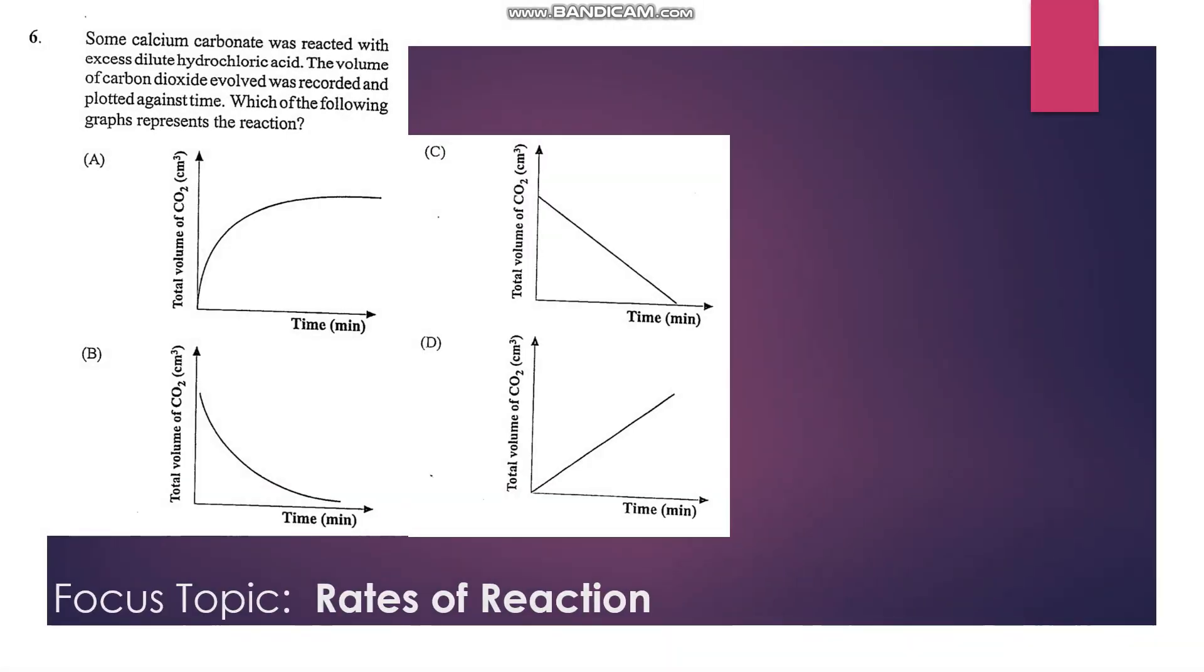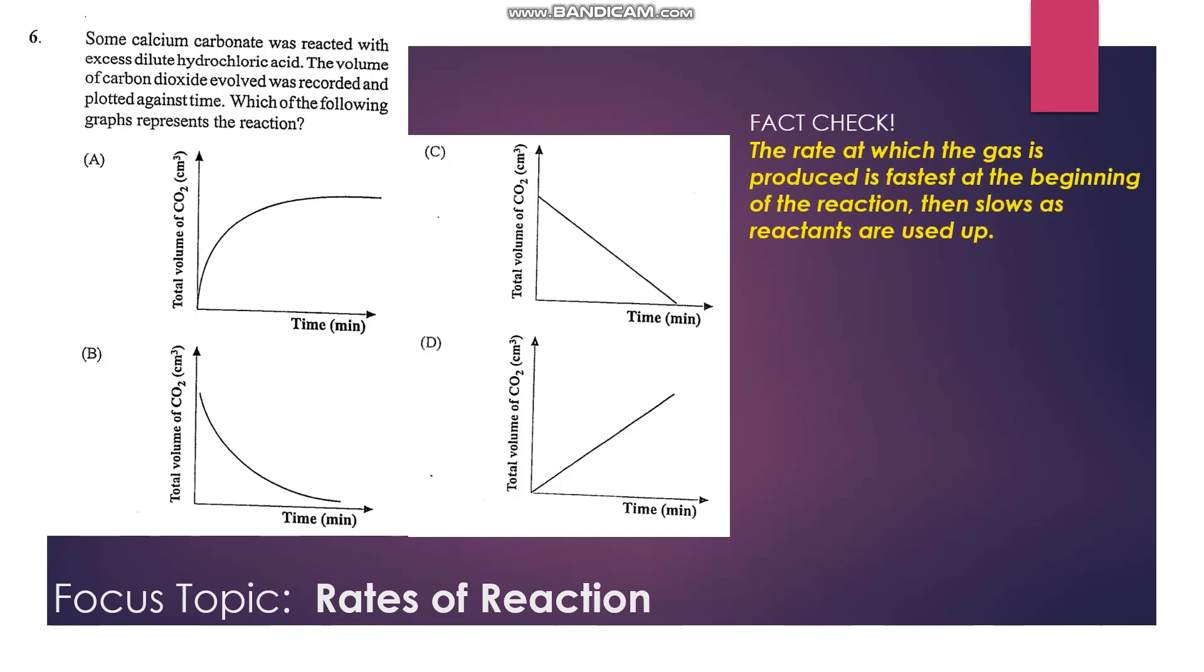Number 6: some calcium carbonate was reacted with excess dilute hydrochloric acid. The volume of carbon dioxide evolved was recorded and plotted against time. Which of the following graphs represents the reaction? During a reaction between calcium carbonate and hydrochloric acid, carbon dioxide gas would be produced, and that gas would be produced fastest in the initial stages of the reaction, and then the amount of gas will slowly decrease. So the total volume of gas would rise rapidly and then taper off, so our answer would be A, the most appropriate graph.